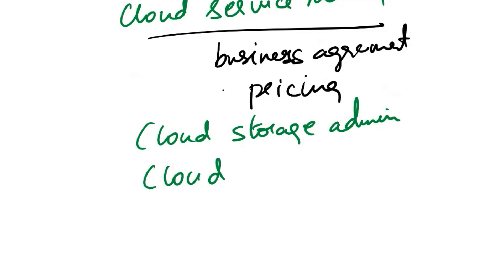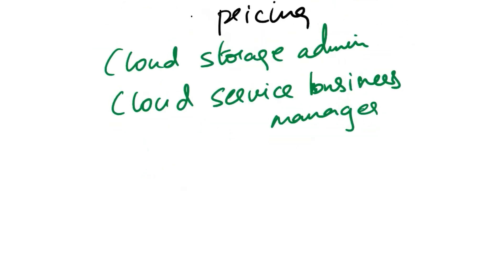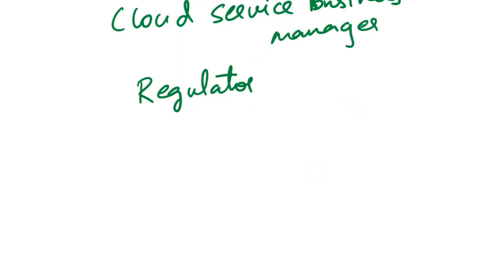Next role is cloud service business manager. The cloud service business manager oversees business and billing administration. Next role is regulator. A regulator is a regulatory body or agency responsible for overseeing and enforcing compliance with laws, regulations, and standards related to specific industries or areas, including information security and data protection.